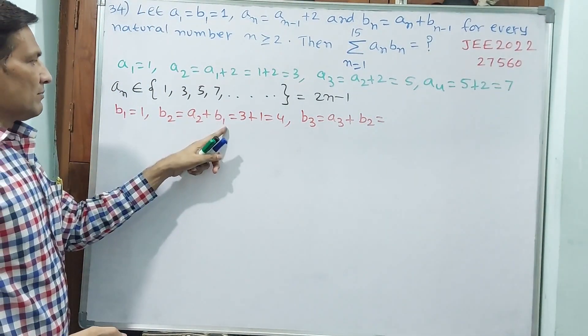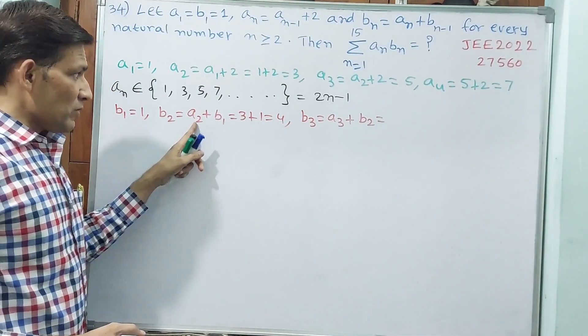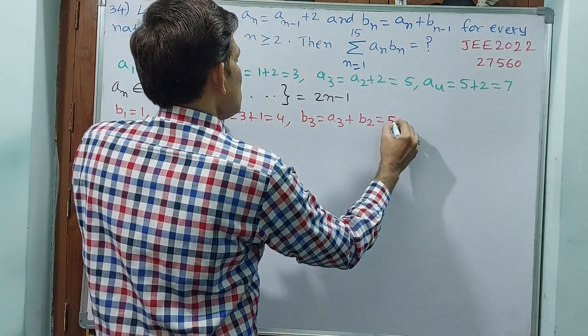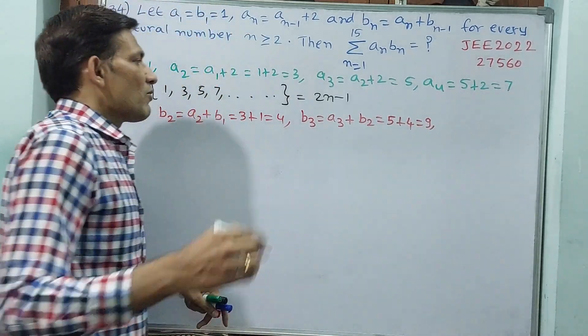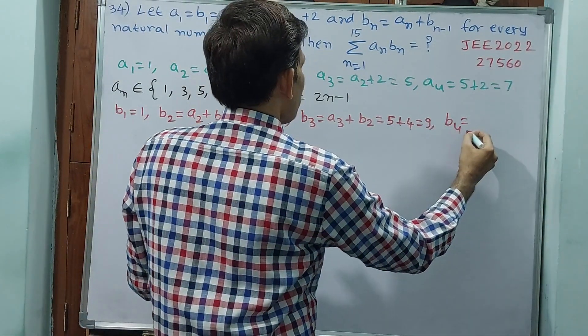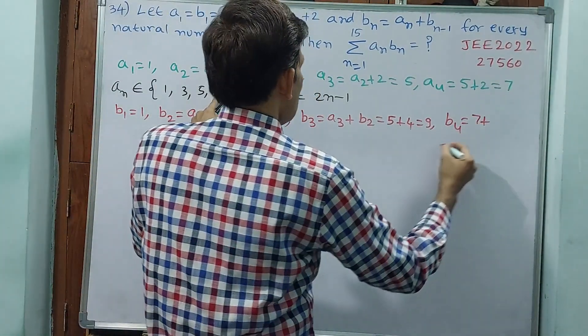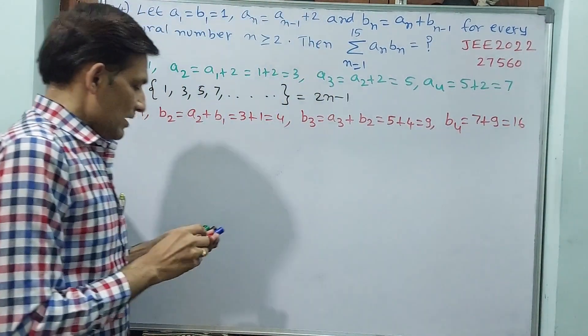b2 means 1 will come. b3 means 2 will come. b2 means a2 will come, b3 means a3 will come. a3 is how much? 5 plus b2 is 4, that is equal to 9. One more we will take, b4 is equal to 7 plus 9, 16.